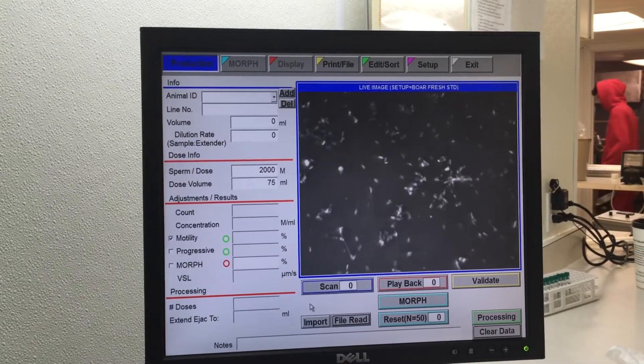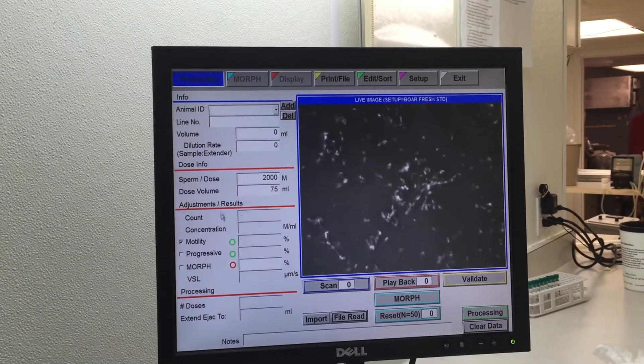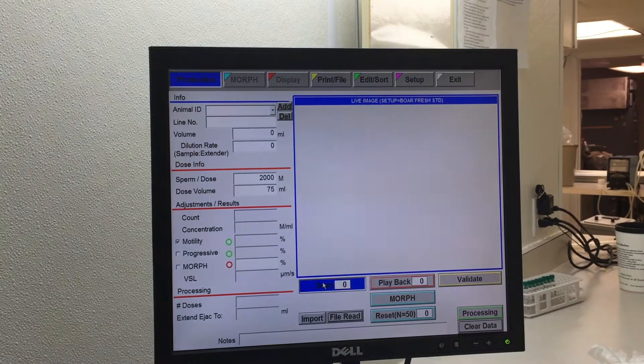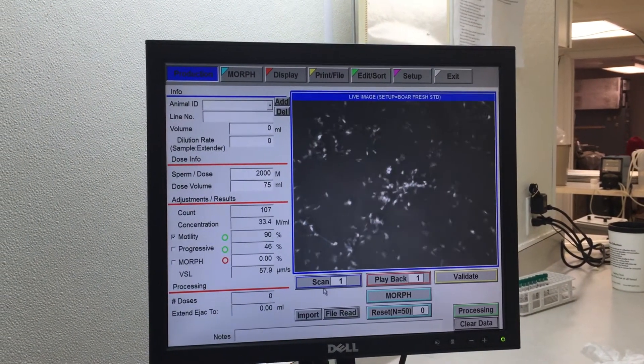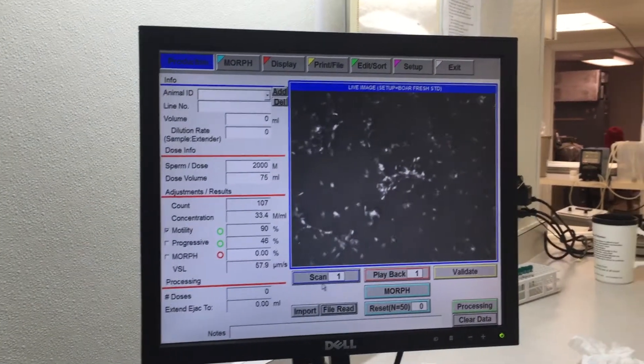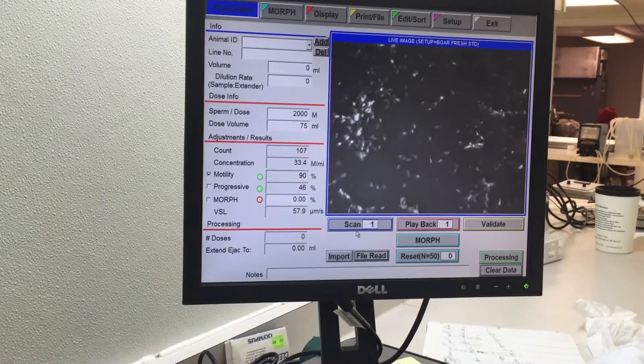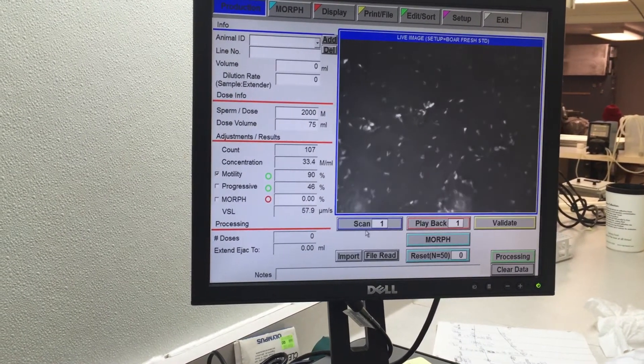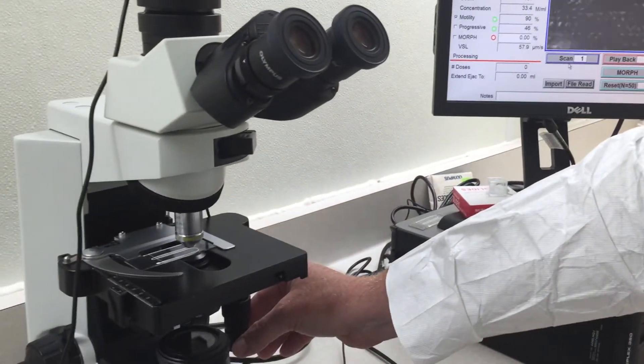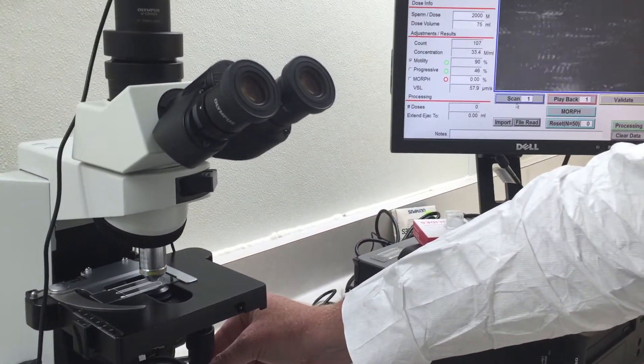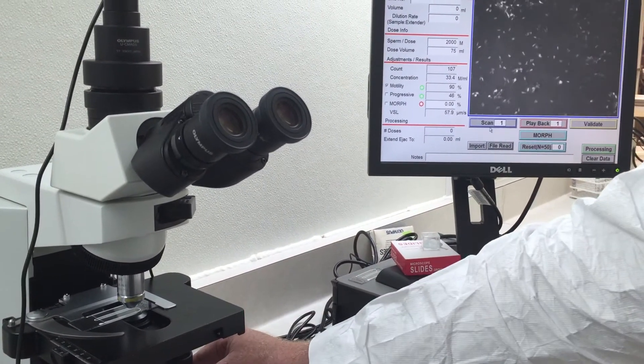But for an eight-day-old sample, we still probably have eighty percent motility here. I can actually cheat and have the CASA scan it. The CASA is saying that it's ninety percent motile, so we have good motility. You can move the slide around to get different views, and you can see this sample is motile and still good enough to use even though it's eight days old.